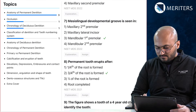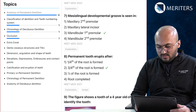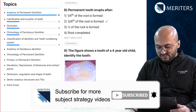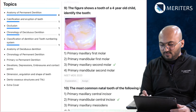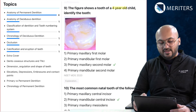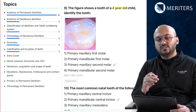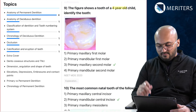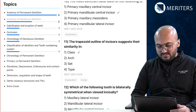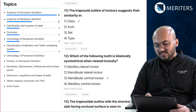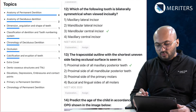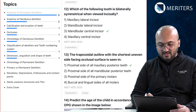Mesial marginal groove is present on which tooth — again anatomy of permanent dentition. Mesiolingual developmental groove — permanent teeth. Eruption of permanent tooth occurs after — topic: calcification and eruption of teeth. Then an illustration of a primary molar of a four-year-old child — identification of each tooth, right and left, first and second molars, primary and permanent — very very important. The most common natal tooth: mandibular incisor. Trapezoidal outline of incisors — that's dimensions, angulation, and shape. Bilaterally symmetrical when viewed incisally — again permanent tooth.